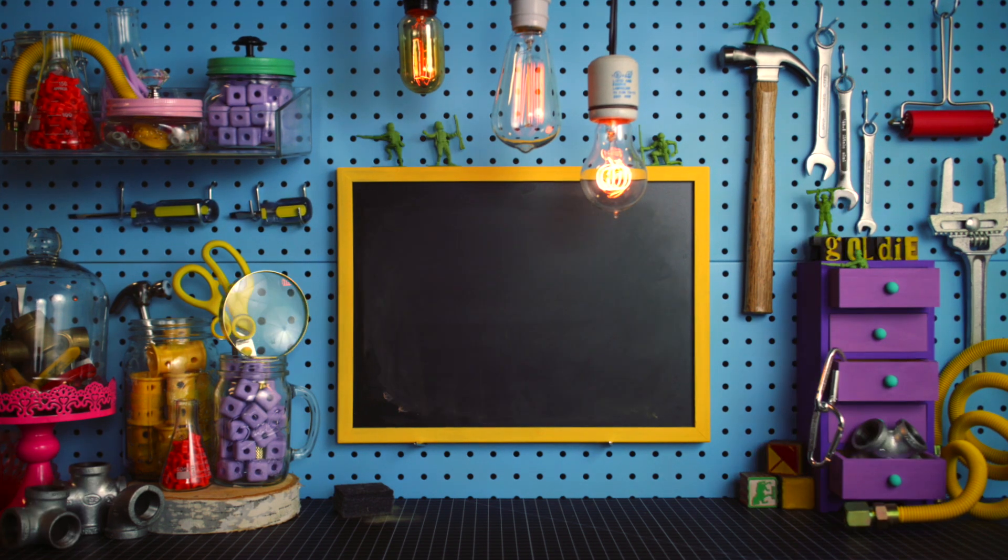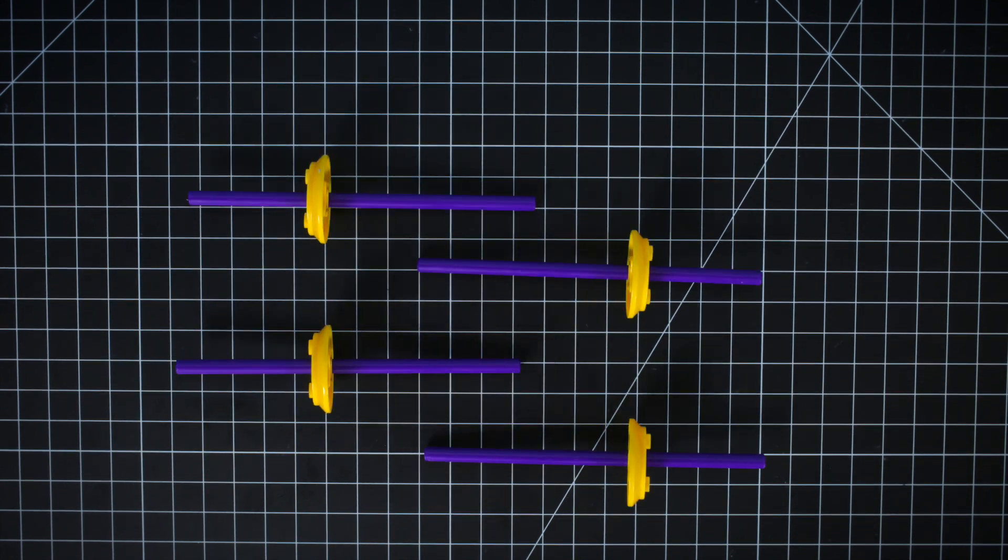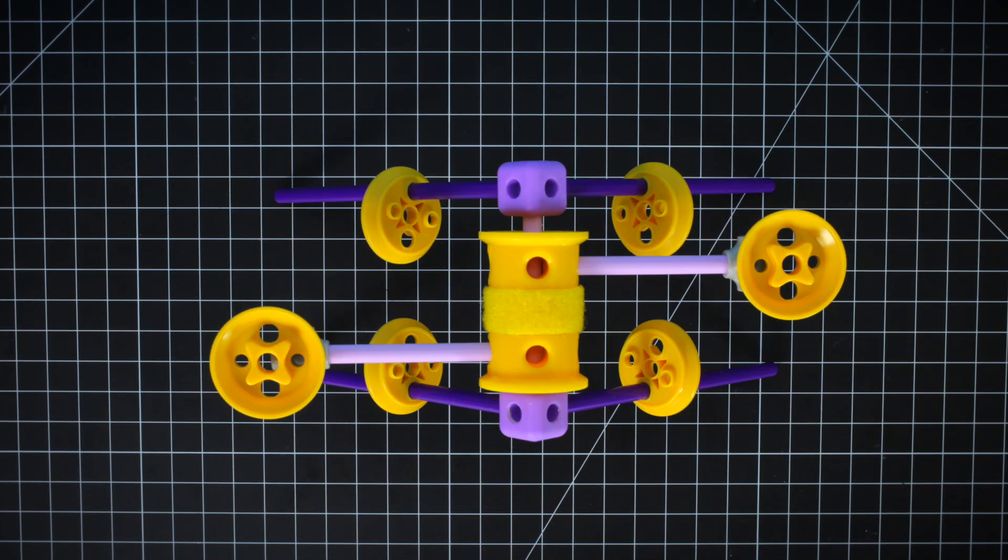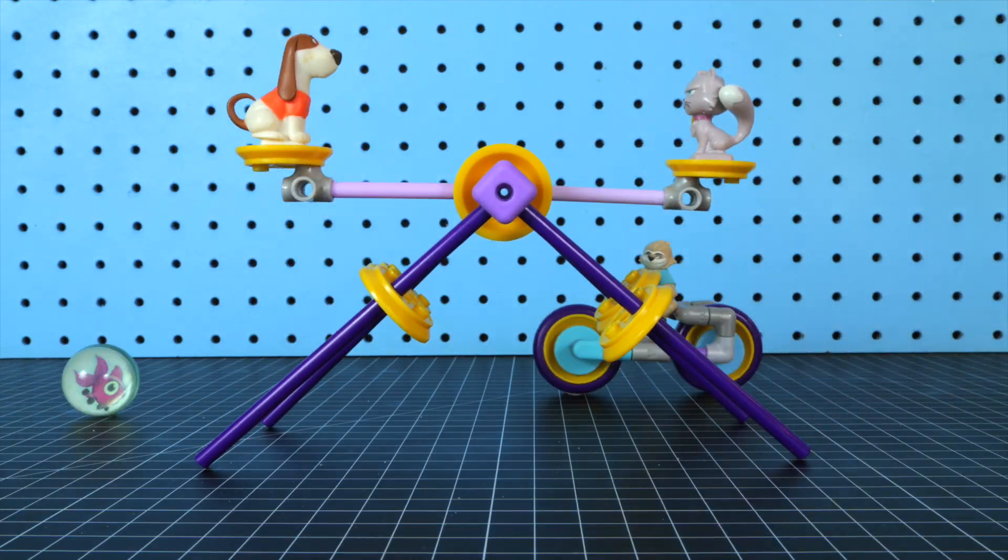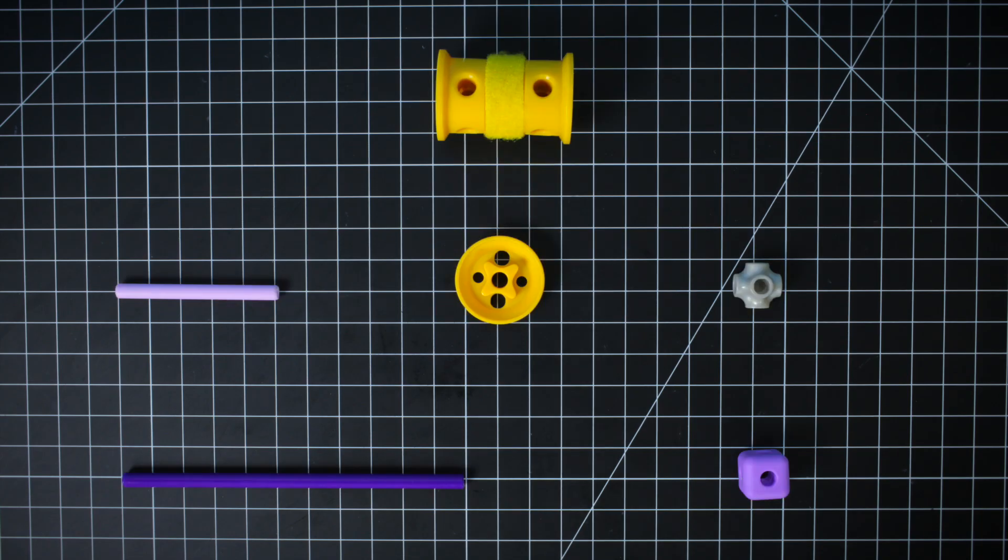Welcome to the Block Shop. In this video, we're going to build a seesaw. Goldie's friends want to make a playground, so we might as well start with a bonafide classic. Ready to help them out? Let's get started. Make sure you have everything. You can pause the video anytime if you need to catch up.